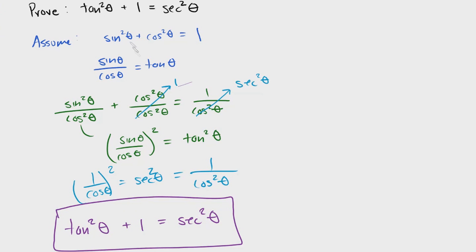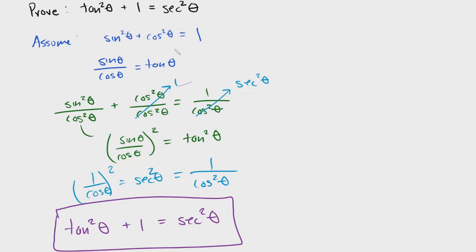Most of these trig functions that are related to each other are defined by this original identity right here. It's just a form of manipulation to derive these other trigonometric identities. Hopefully this video helped you guys, and I'll see you in the next video.